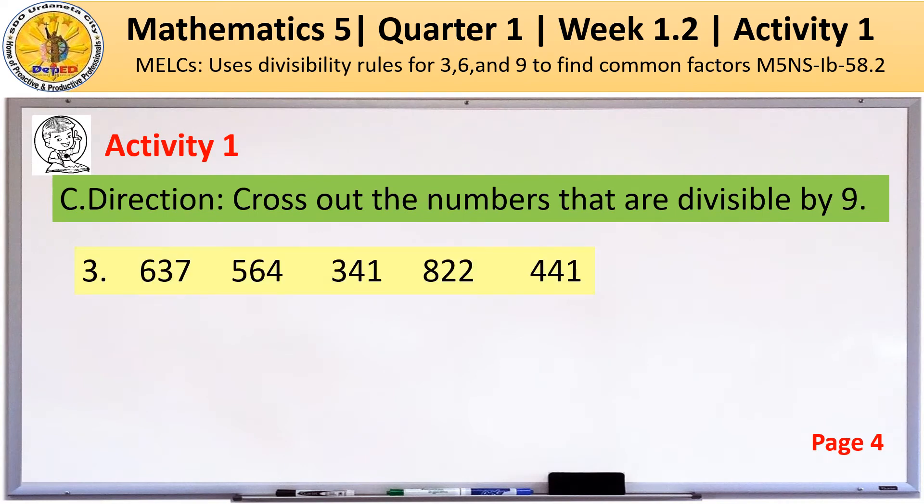Let's try number 3. We have 637, 564, 341, 822, and 441. Among this set of numbers, we're going to cross out the number that is divisible by 9.